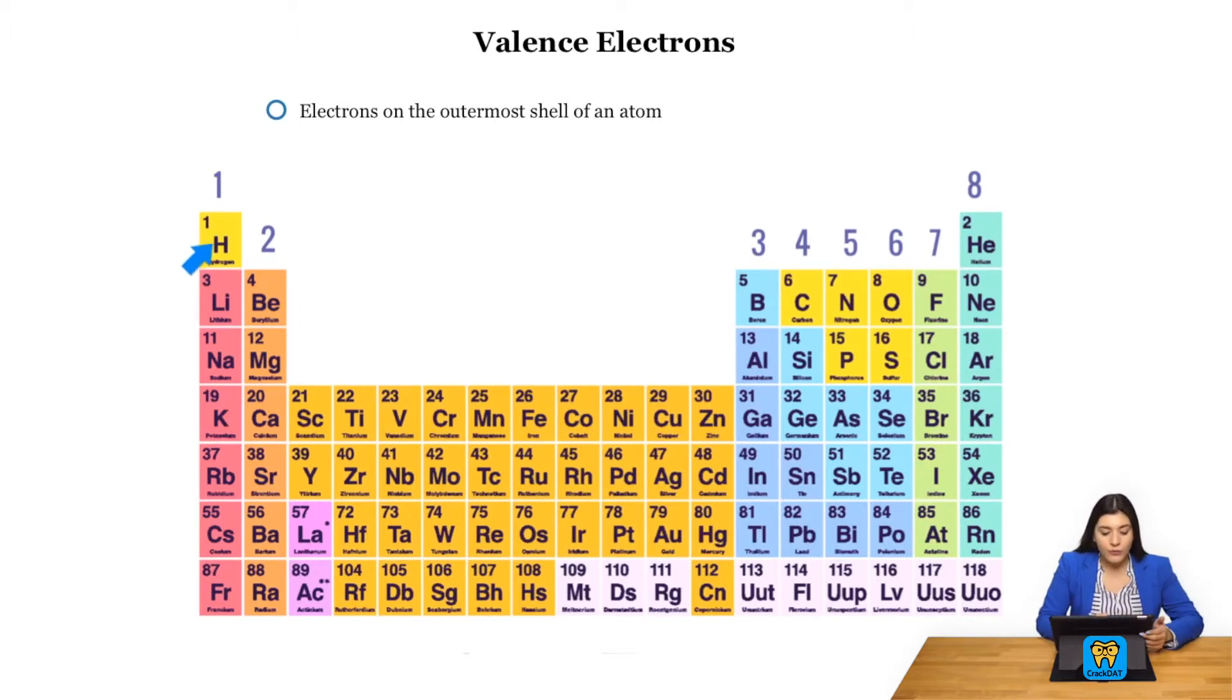Looking at the periodic table, our first group is going to have one valence electron, the second group has two. We will skip the transition metals because the amount of valence electrons varies, and then next we'll see it continues and it goes three, four, five, six. Halogens have seven valence electrons and noble gases are eight. Make sure to have this down and memorize how many valence electrons every single element has.